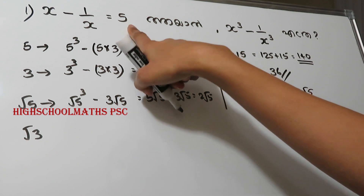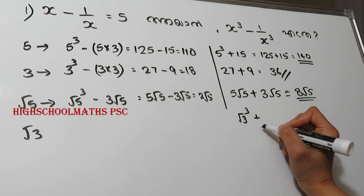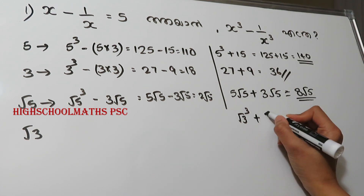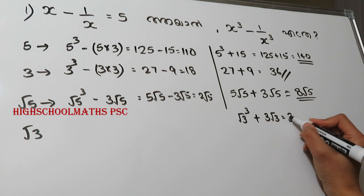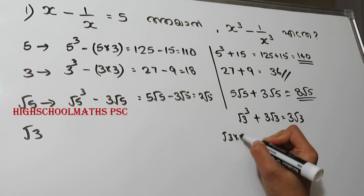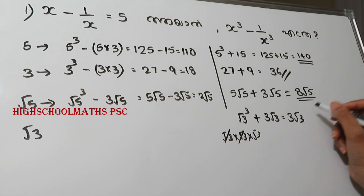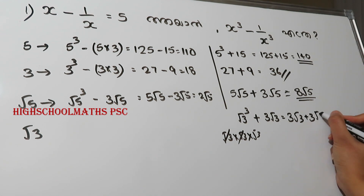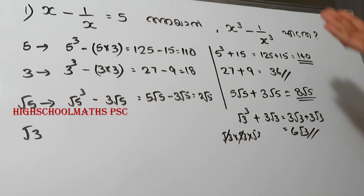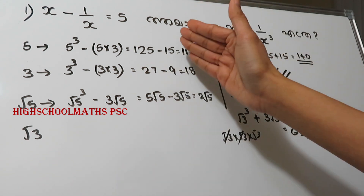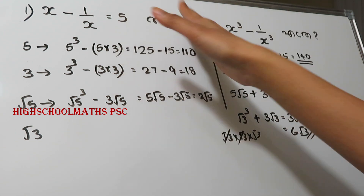We have root 3. x minus 1 by x is equal to root 3. Root 3 is cube — we have minus here. We have 3 into root 3, which is 3 root 3. What does root 3 mean? 3 root 3 is 3 root 3, because root 3 is root 3. If root 3 is 3 root 3, then 3 plus 3 is 6 root 3. We have minus here. But we think that 3 root 3 is cube. Sometimes x plus 1 by x equals 5; you have to use minus 3 or minus plus. That's why we do this. We can take this number 3.